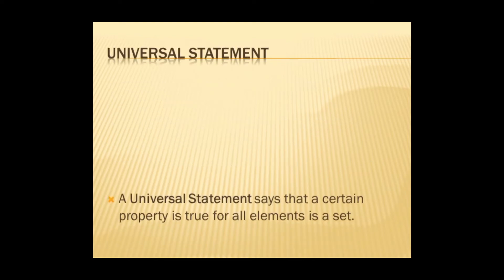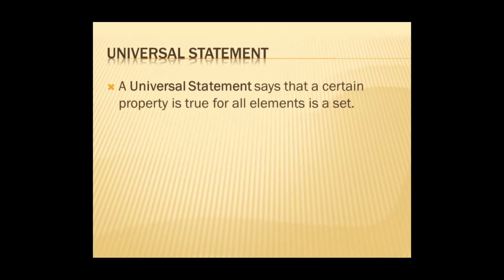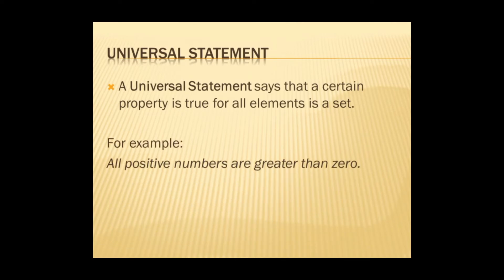Next is the universal statement. A universal statement says a certain property is true for all elements in a set. For example: all positive numbers are greater than zero. To determine if it's a universal statement, we look for the word 'all' — all positive numbers are greater than zero. The property is true for all elements in a set.